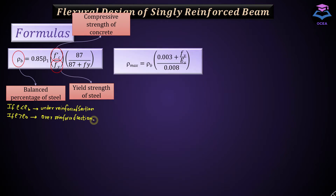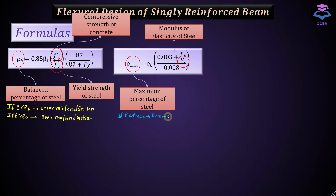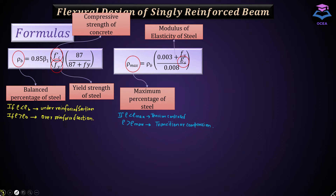The second equation is used to calculate the upper limit of steel percentage, called the maximum steel percentage. ES here is the modulus of elasticity of steel. If the actual percentage of steel used in the section is less than the maximum percentage of steel, the section will be a tension-controlled section having a net tensile strain greater than or equal to 0.005. If the actual percentage of steel is greater than the maximum, the section will go into the transition region or even worse, a compression-controlled section.